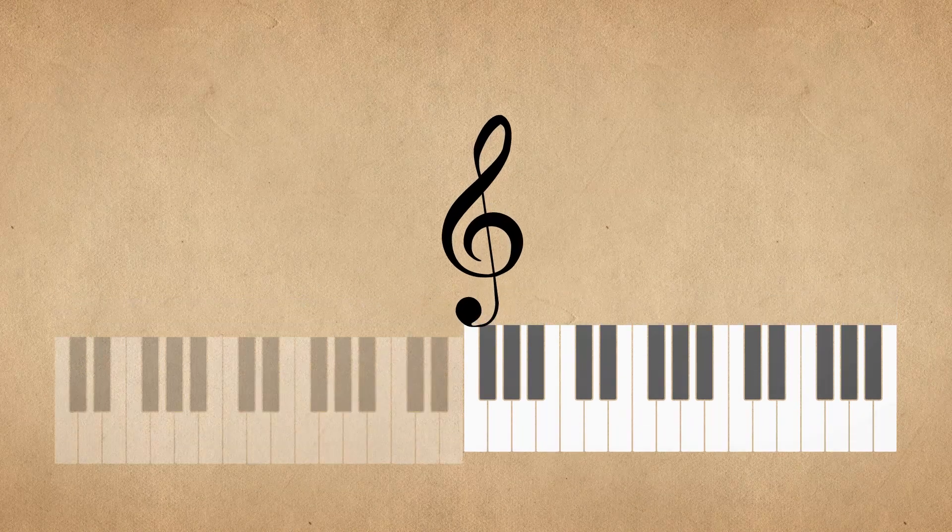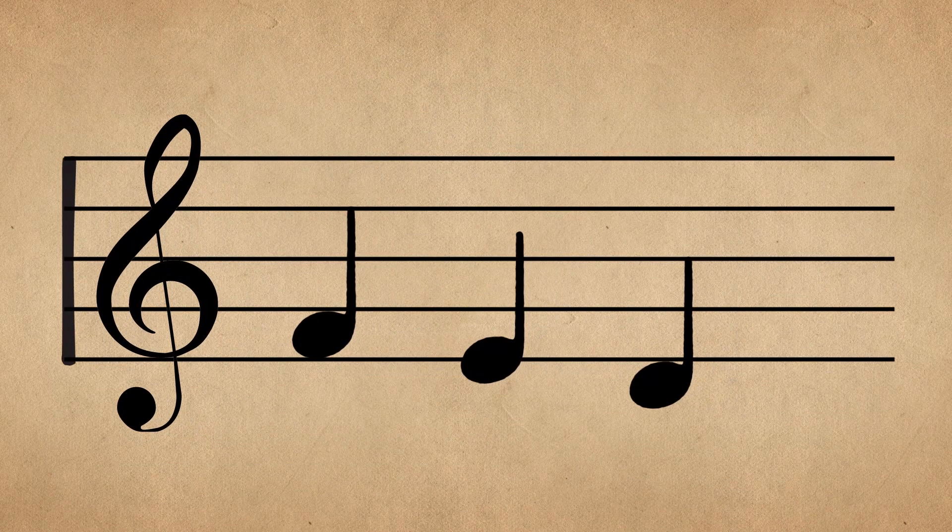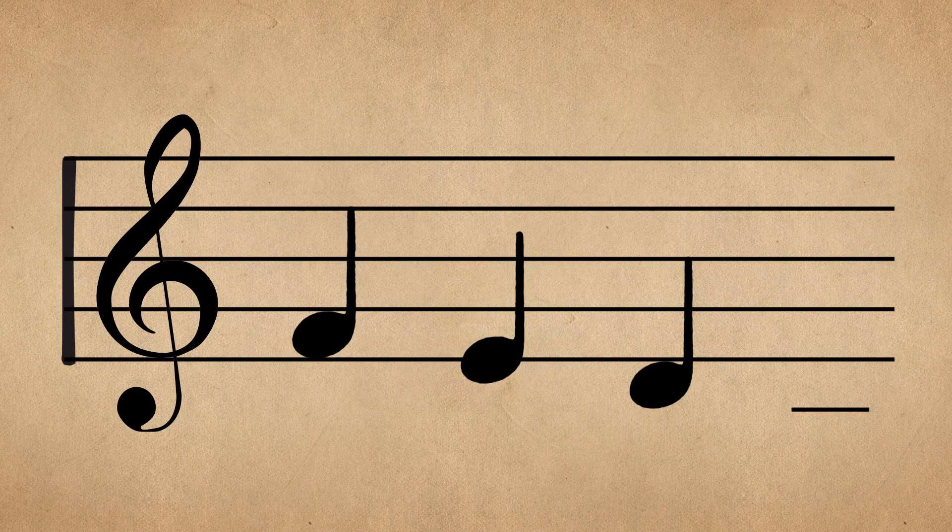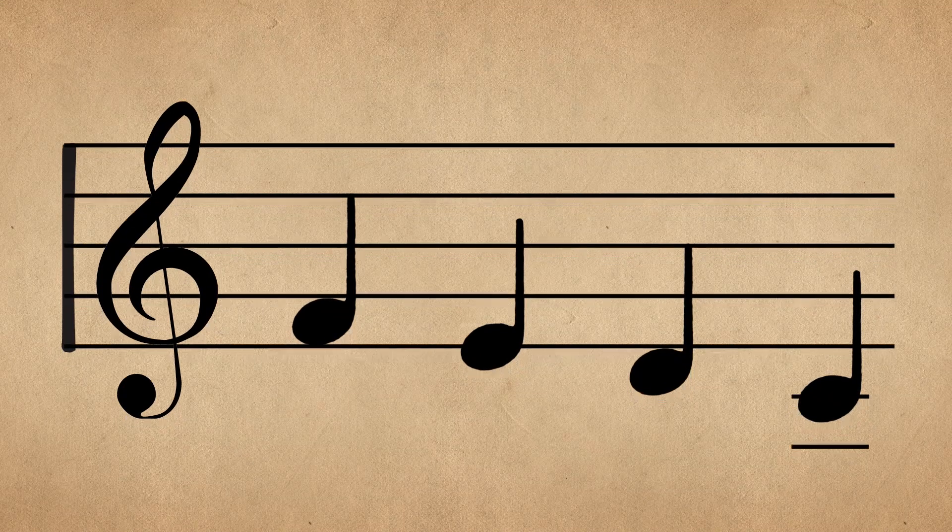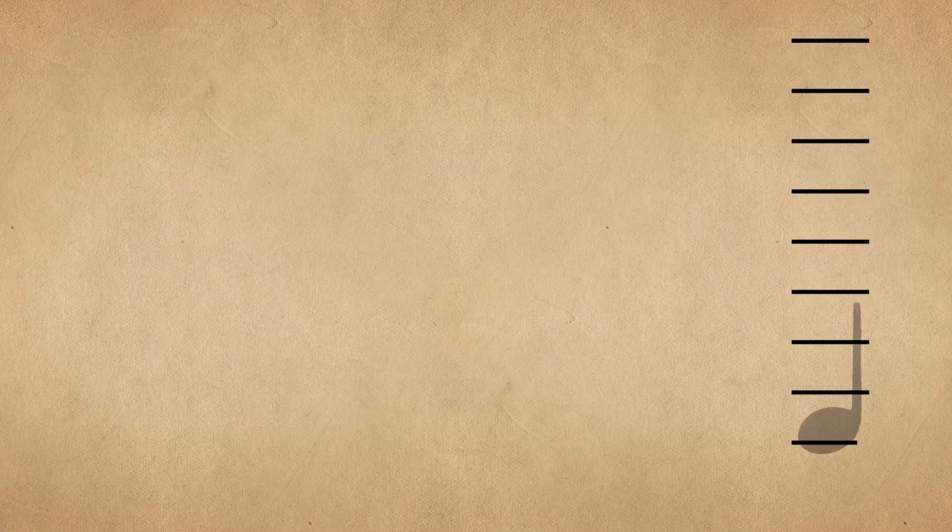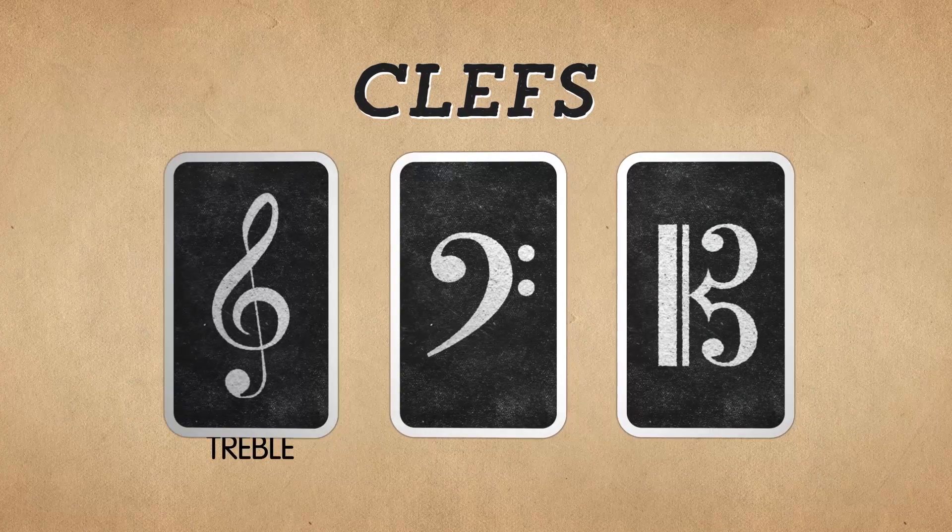If we want to play notes that aren't on the staff, we kind of cheat and draw extra little lines called ledger lines and place the notes on them. If we have to draw so many ledger lines that it gets confusing, then we need to change to a different clef.